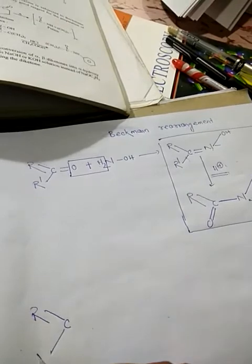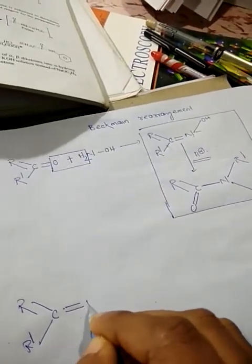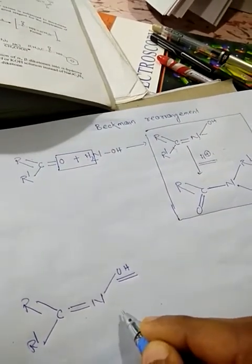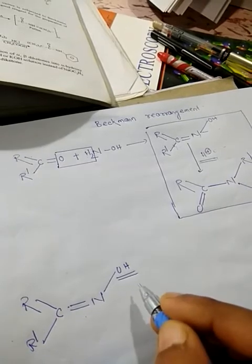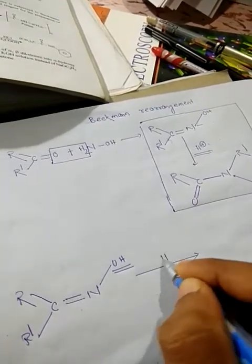The mechanism: first, as we know that in case of an oxime, this hydroxyl group is a poor leaving group, so we must convert it into a better leaving group. Initially, we protonate this one.